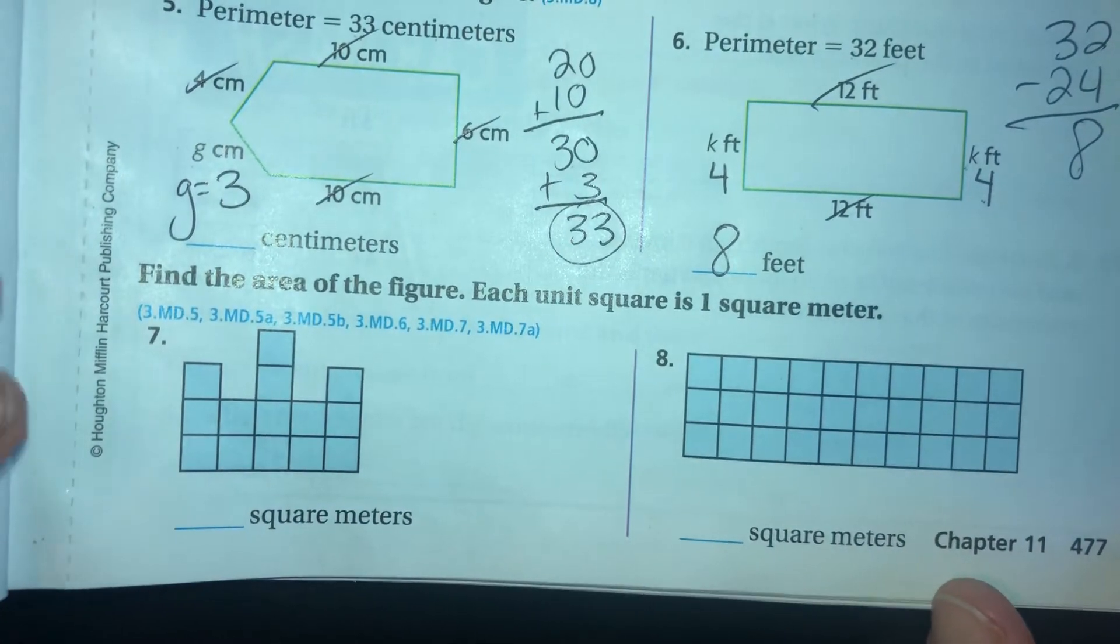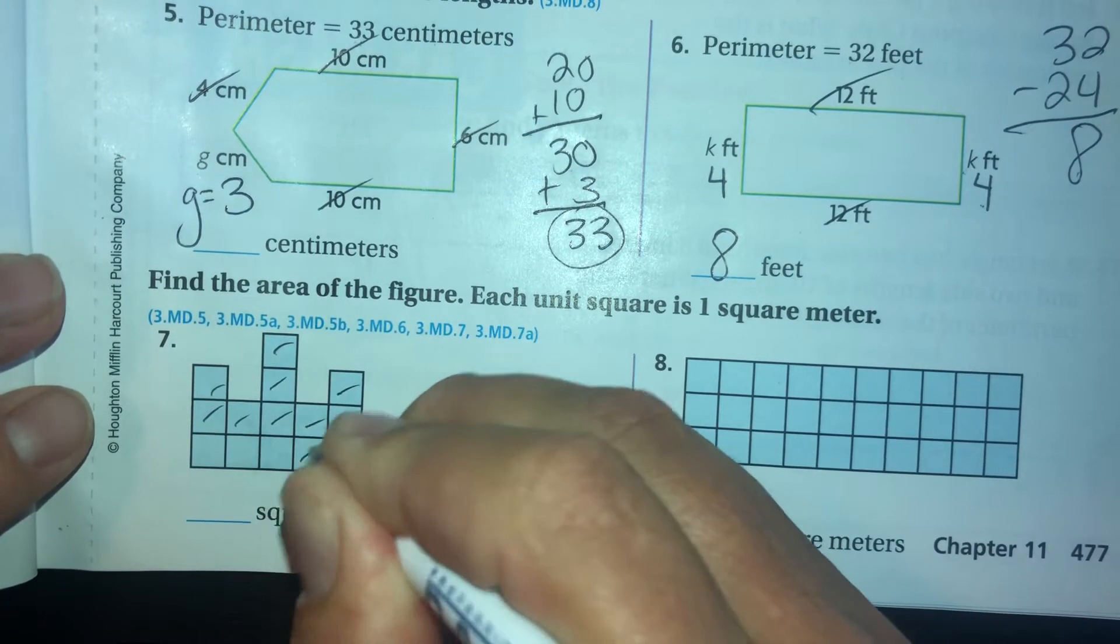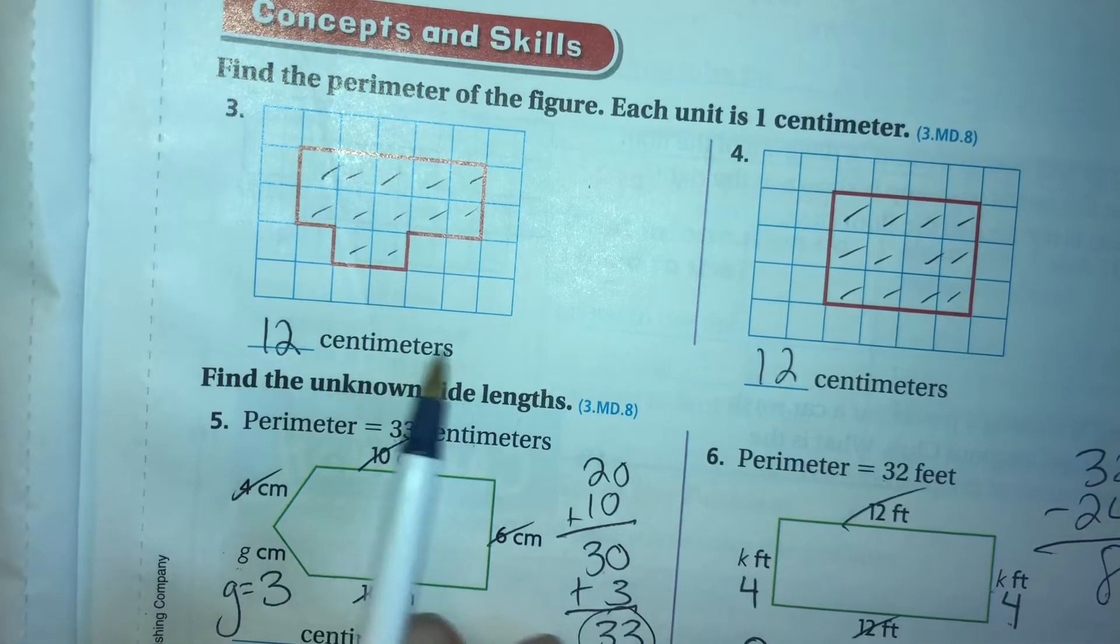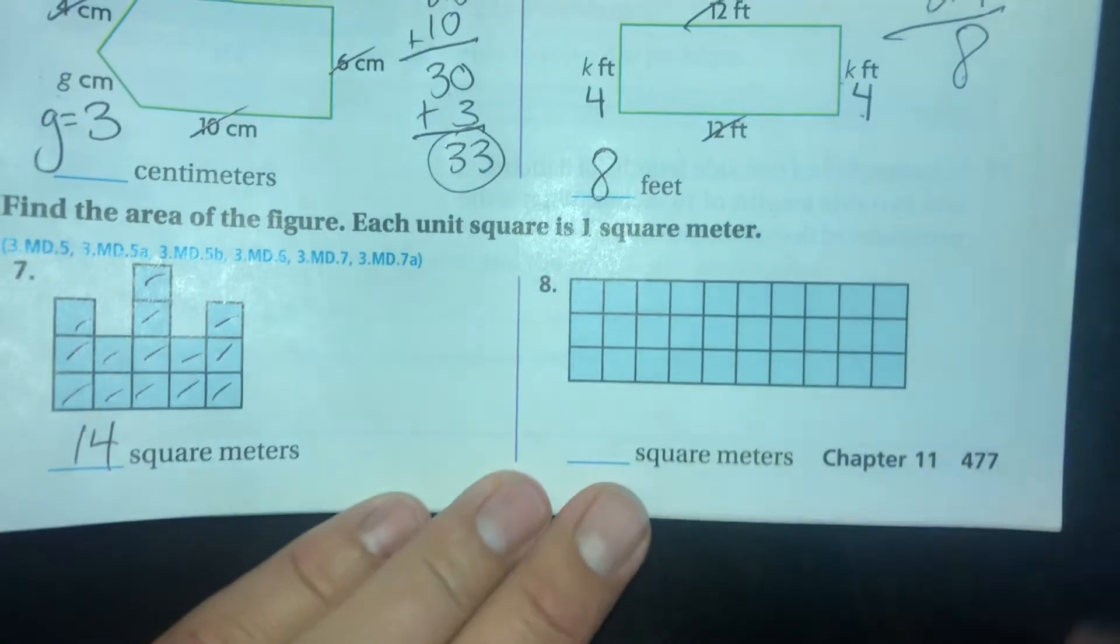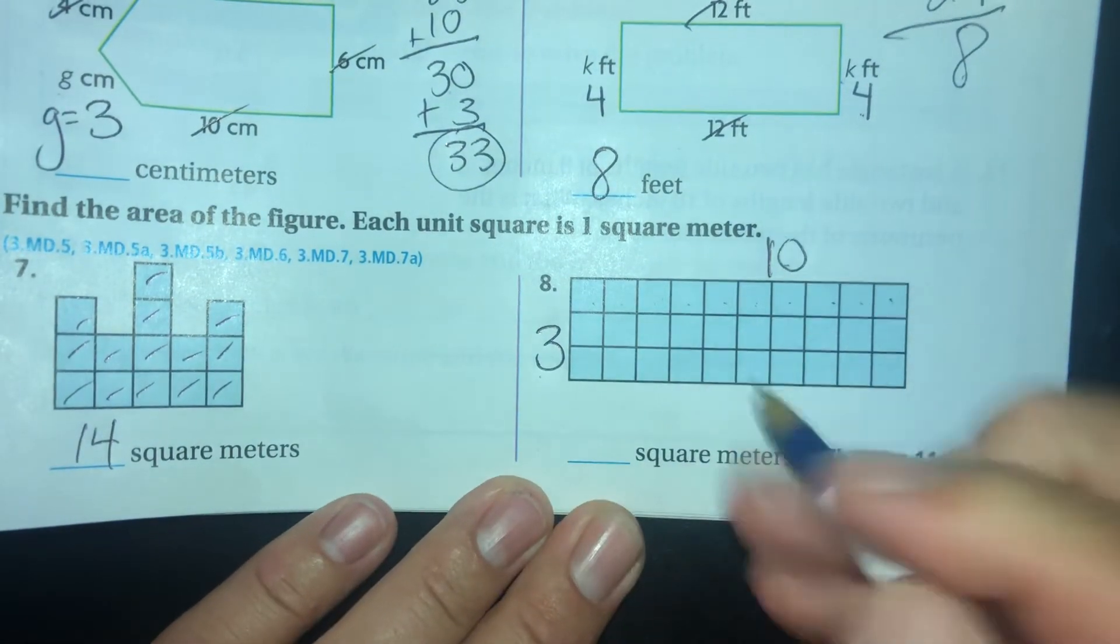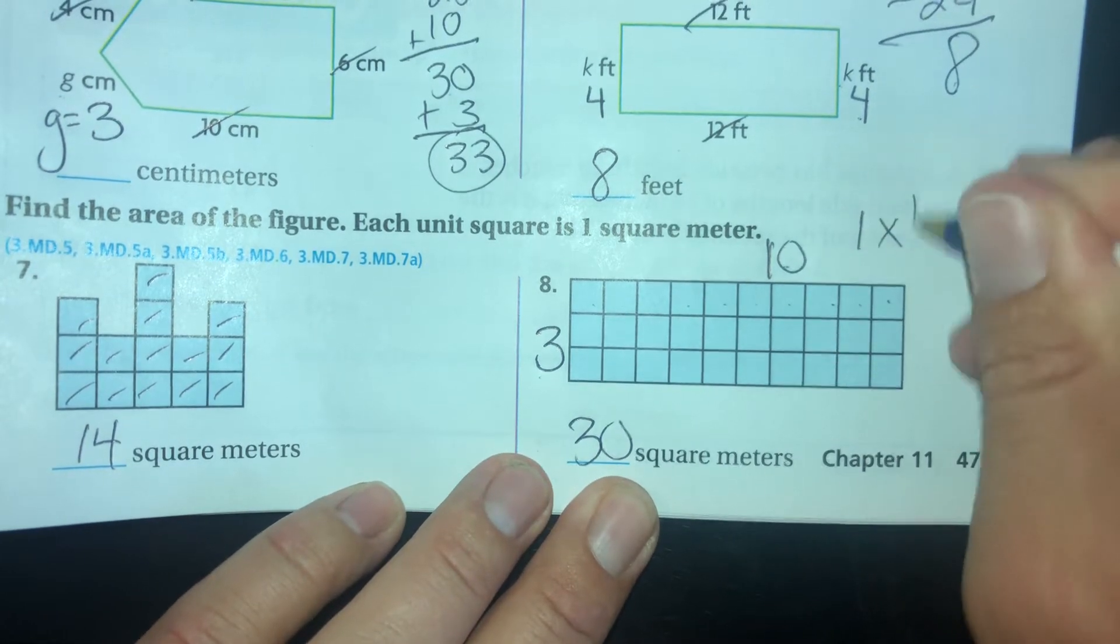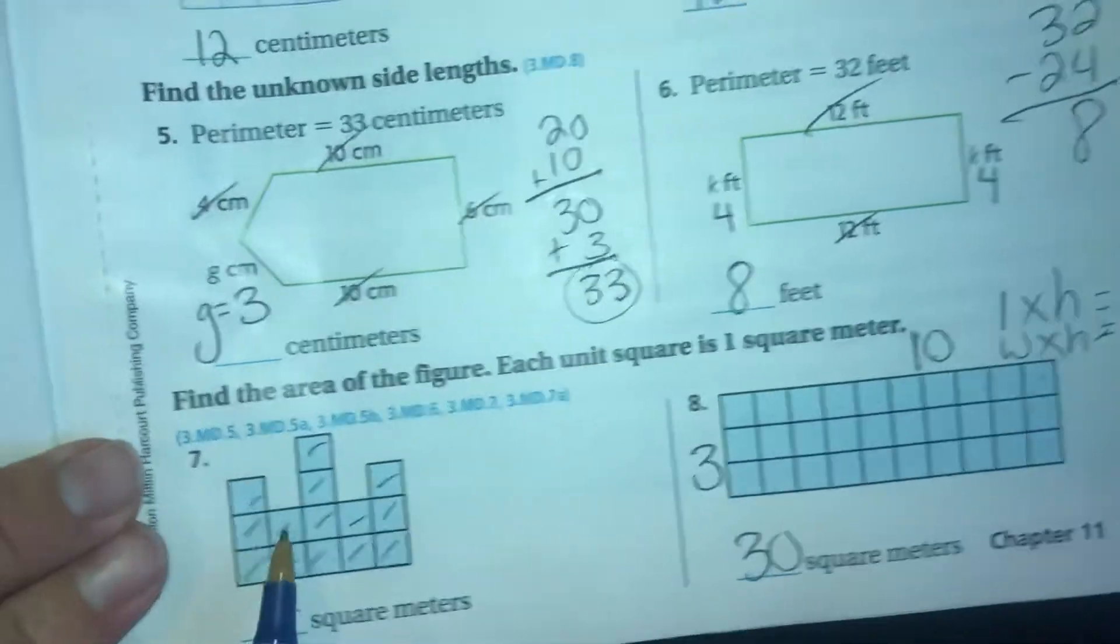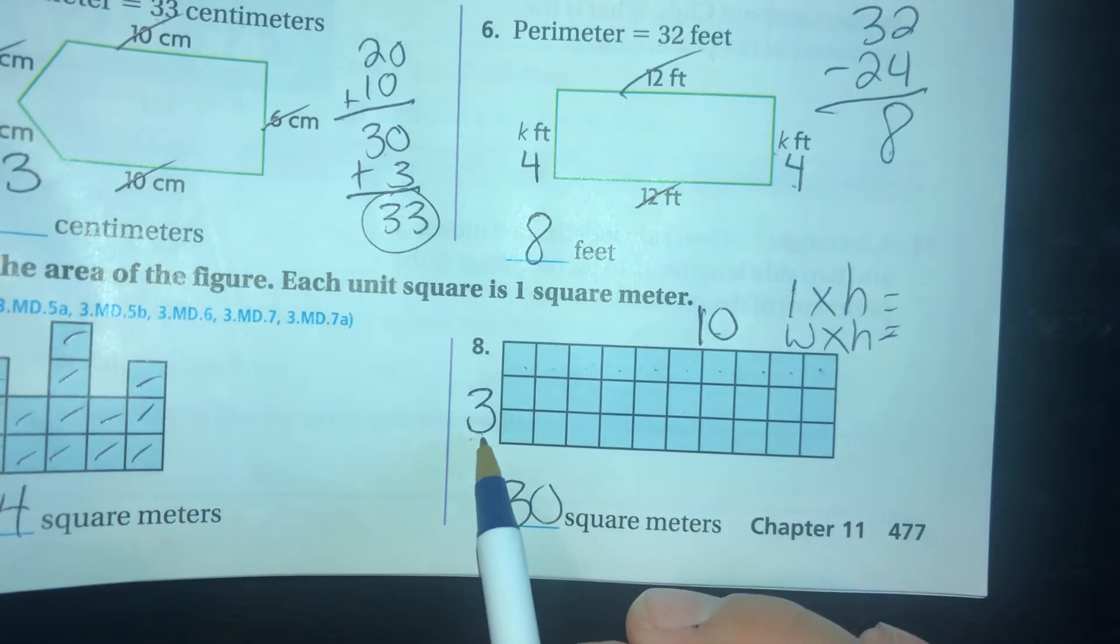Alright, number seven, find the area of the figure. Each unit is one square meter. One, two, three, four, five, six, seven, eight, nine, ten, eleven, twelve, thirteen, fourteen square meters. I think up here these should be square centimeters too. I think the book might have messed up there. Number eight, let's see. We have a three: one, two, three, four, five, six, seven, eight, nine, ten. So a 3 by 10 is 30 square meters because I used length times height or width times height as my formula for area. Now I could have just counted the squares like I did for some of these other ones, but sometimes the quicker way to do it is to know the formula and just go 3 times 10.